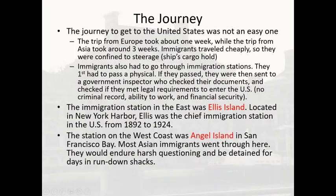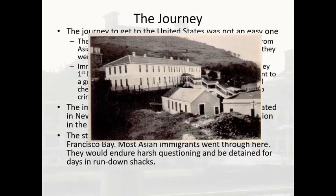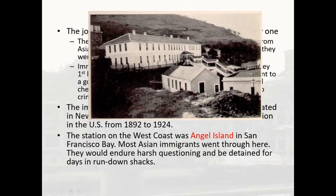The station on the west coast was quite different — Angel Island in San Francisco Bay. Most Asian immigrants went through here, where they would endure harsh questioning and be detained for days in run-down shacks. Angel Island was more like a prison than an immigration station. As we saw in our video about Fong C. and his family, Asian immigrants could be detained there indefinitely until they were finally let in or sent back home.